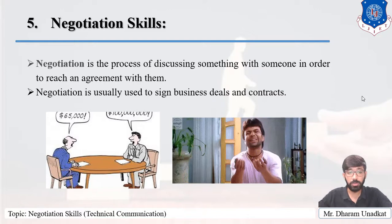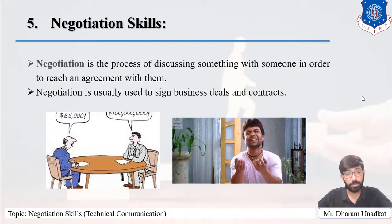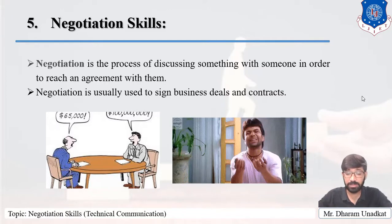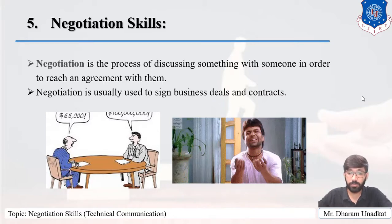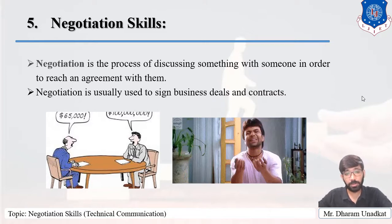It is very important to learn negotiation skills. There is also a process for how you have to negotiate, known as the negotiation process. Negotiation happens in various stages — generally three stages. The first stage is information exchange. Both parties exchange information about what they can offer and what their expectations are. For example, if someone is selling something, there is a seller and a buyer. First, the seller introduces his or her product.